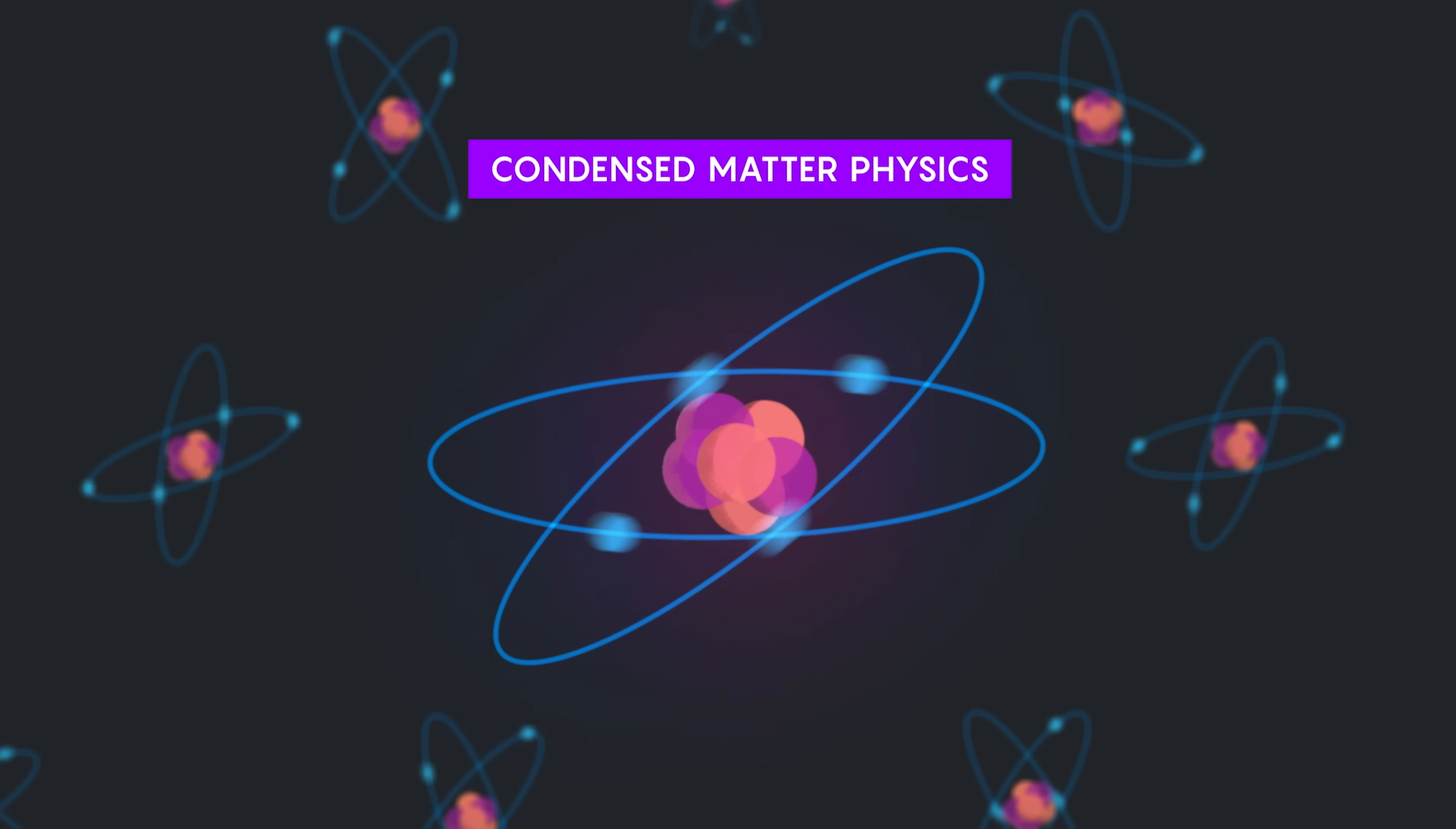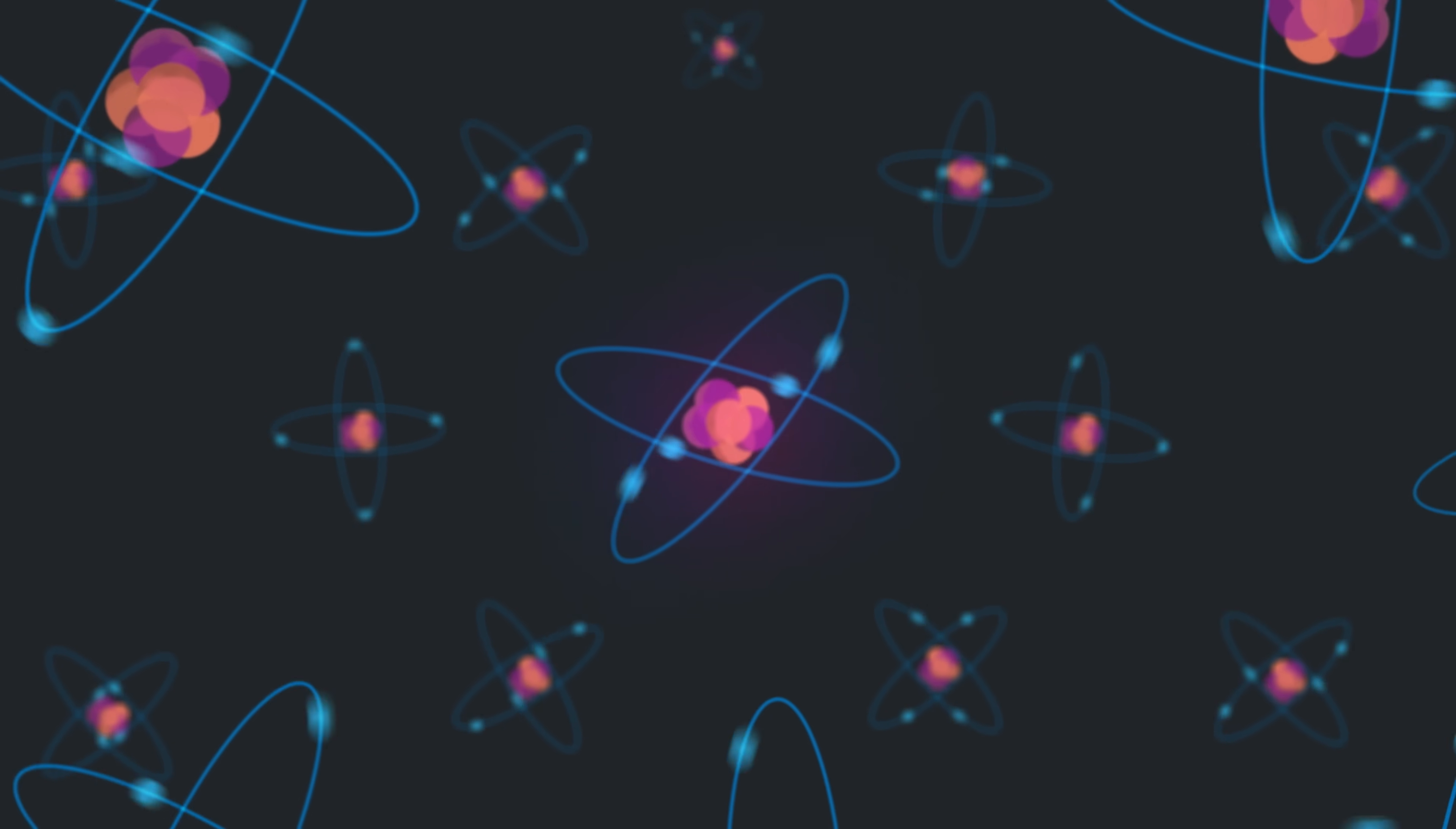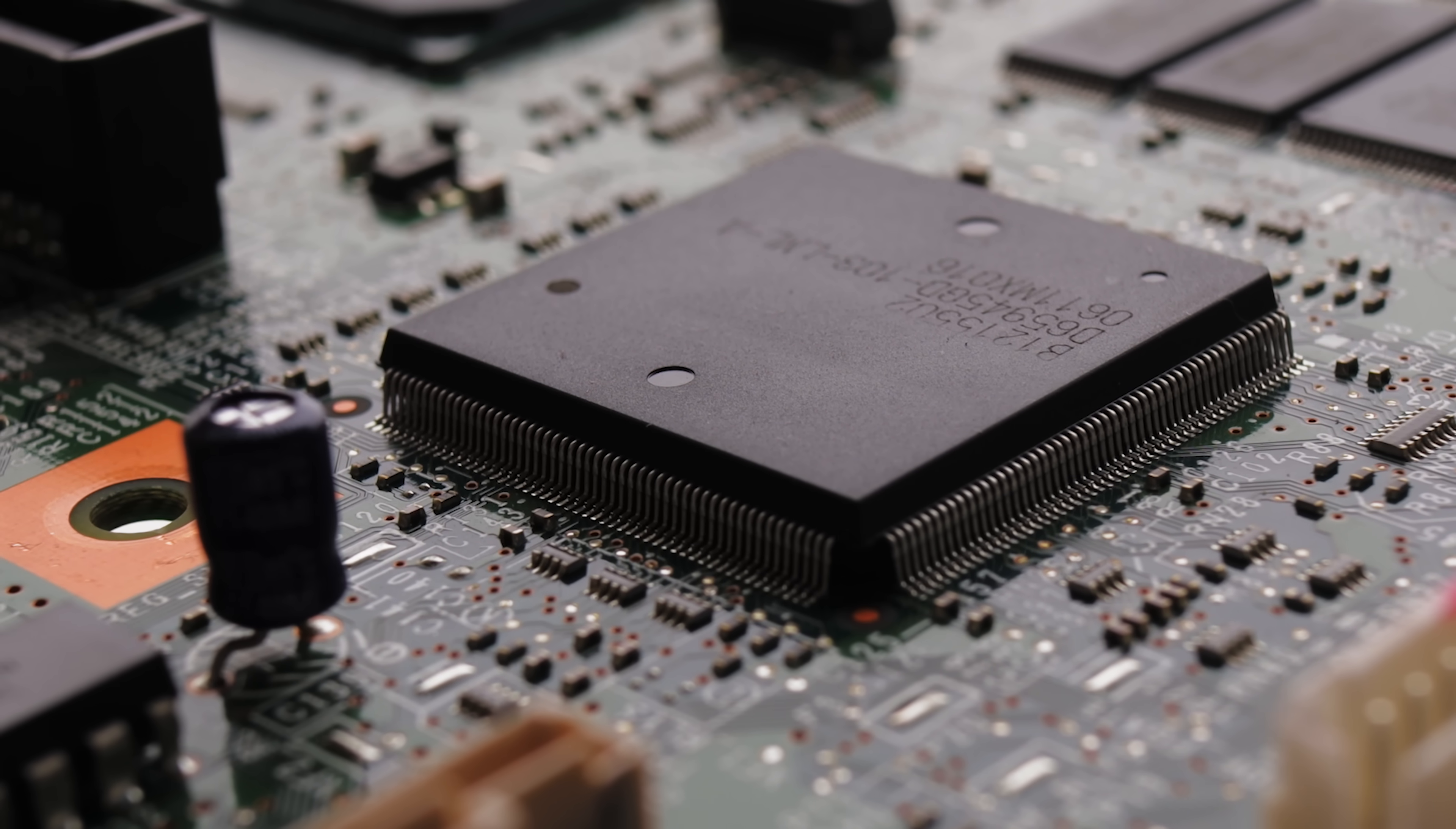Condensed matter physics is the study of matter and the diverse forms of matter that arise when atoms and electrons are assembled in different ways. It's the most active field of contemporary physics and has yielded some of the biggest breakthroughs of the past century. But as rapidly as technology has advanced, scientists have only scratched the surface of the electron's potential, harnessing just a few of its behaviors.